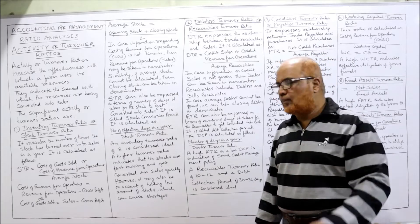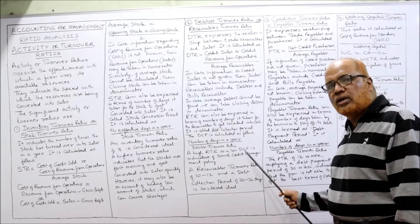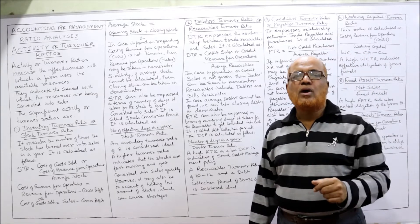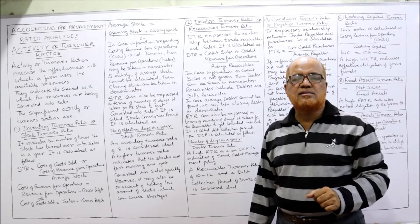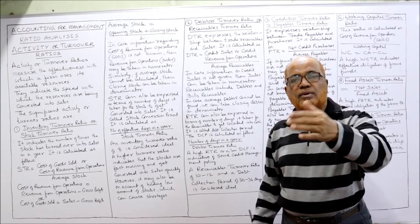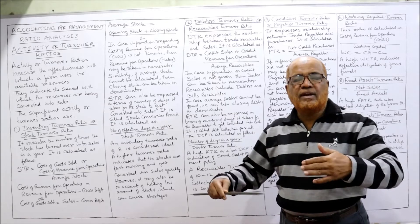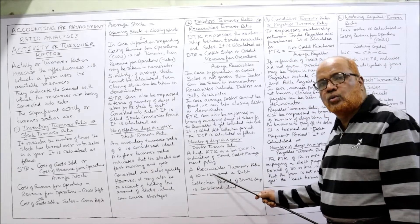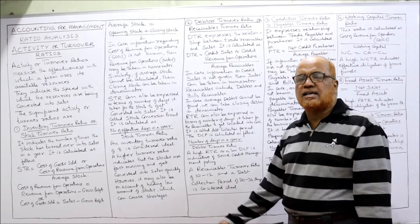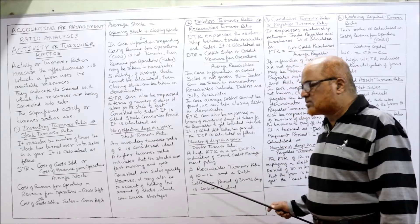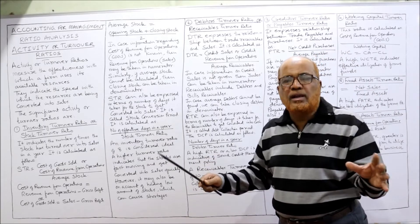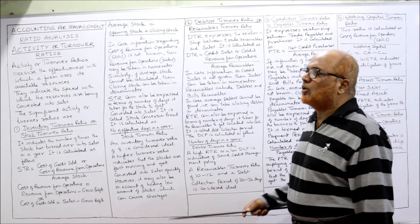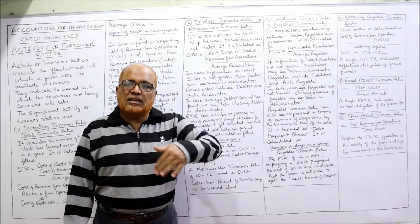A high receivables turnover ratio or a low debt collection period indicates sound credit management policy, because converting receivables into cash quickly is better for the business. A receivables turnover ratio of 10 to 12 and a debt collection period of 30 to 36 days is considered ideal. This is the normal benchmark, though it may differ across organizations.